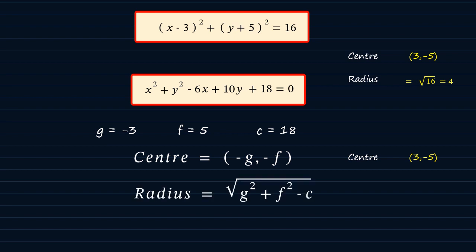And now for the radius. We said we find radius by the square root of g squared plus f squared minus c. So that's the square root of minus 3 squared plus 5 squared minus c, which is 18. And eventually, this is going to give us square root of 16, which is 4. And that's the radius.